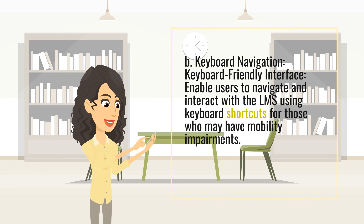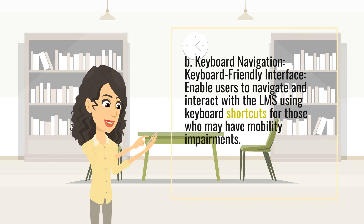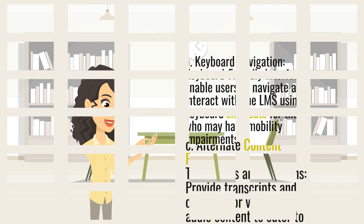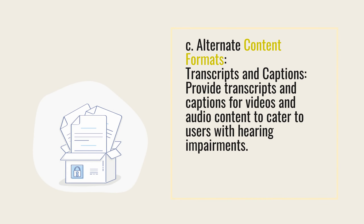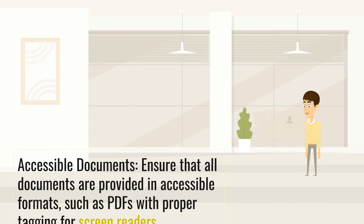B. Keyboard navigation. Keyboard-friendly interface: enable users to navigate and interact with the LMS using keyboard shortcuts for those who may have mobility impairments. C. Alternate content formats. Transcripts and captions: provide transcripts and captions for videos and audio content to cater to users with hearing impairments. Accessible documents: ensure that all documents are provided in accessible formats, such as PDFs with proper tagging for screen readers.